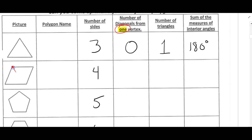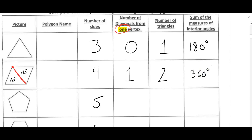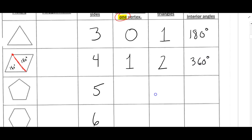Moving on to our quadrilateral — I'll pick one vertex and draw the diagonals from it. I can draw one diagonal, so the number of diagonals from one vertex is one. That divides the quadrilateral into two triangles. Each triangle has 180 degrees, so the sum of the interior angles is 360 degrees.